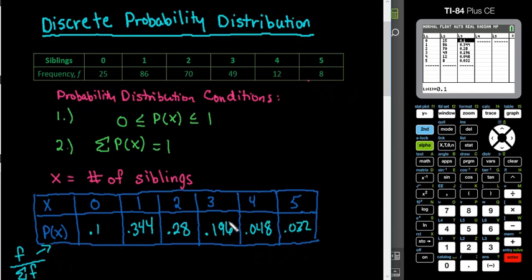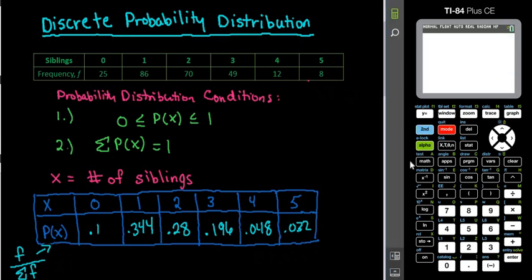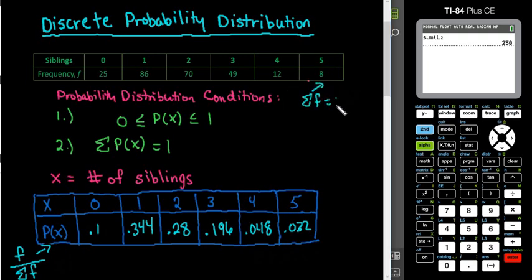In order to guarantee that this is a probability distribution, I'm going to quit out of the screen for a second and go back to my list where we had the sum, just to show you that if I wanted to find the sum first of the frequencies, I would do the sum of L2. And that tells me that the sum of my frequencies is 250. So there were 250 people that were polled, and these were the results of the poll. So this is the probability distribution or the relative frequency.